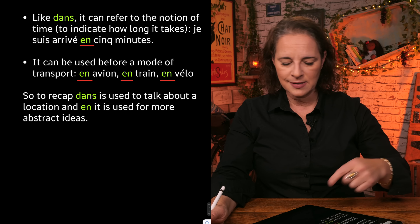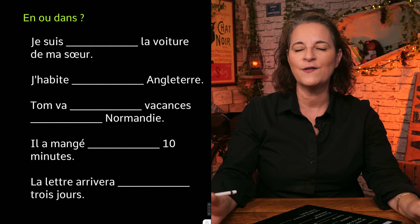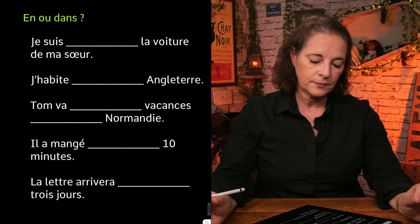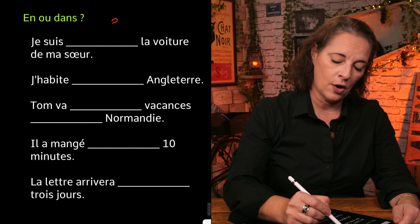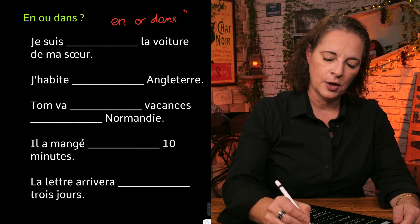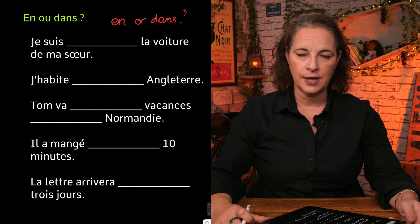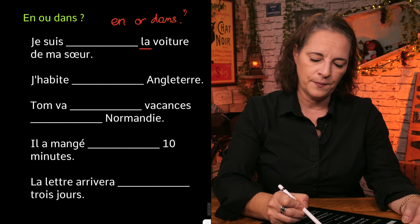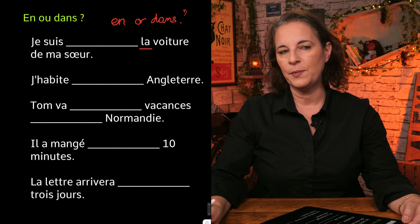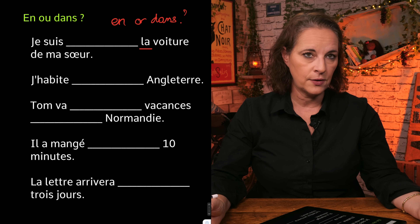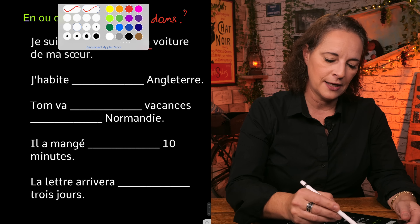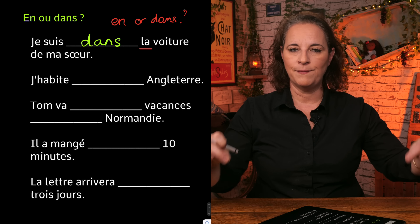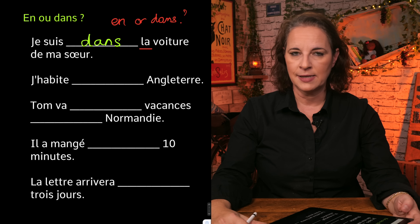That was a very quick lesson. Of course, there are more lessons in the course if you want to know more. Let's have a look at some examples — en ou dans? Je suis [blank] la voiture de ma soeur. What you need to see is what comes after the word en or dans: there is an article here. We know that for en there is no article — like en vacances, no le or la after en. So it has to be dans: je suis dans la voiture de ma soeur — I am in my sister's car.